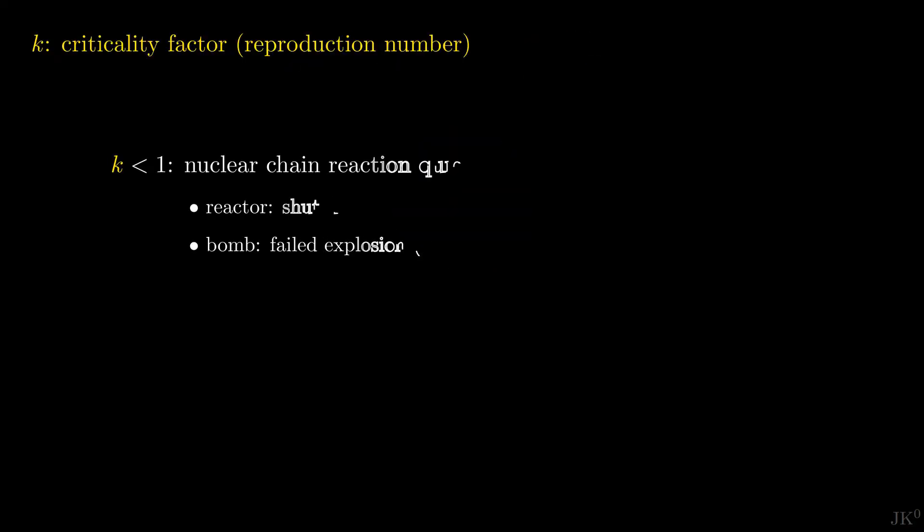If K is less than 1, the chain reaction will quickly die off. In a reactor, this simply shuts the reactor down. In a bomb, K less than 1 leads to a failed explosion, orders of magnitude below the design yield. This is called a fizzle. If we want to trigger a nuclear chain reaction, we need a continuously increasing number of neutrons. Therefore, we need K greater than 1.